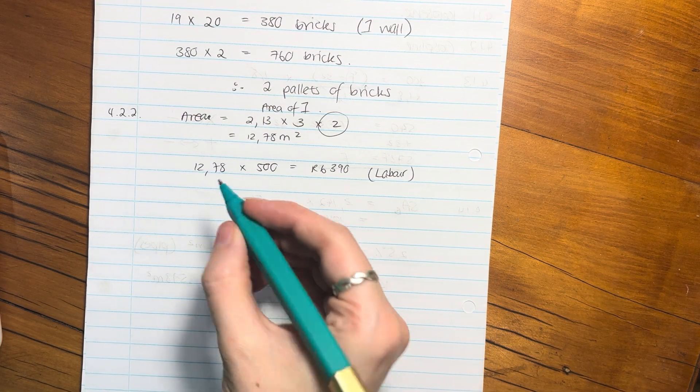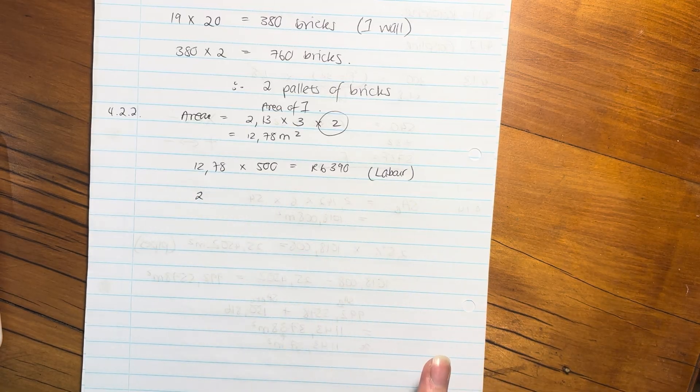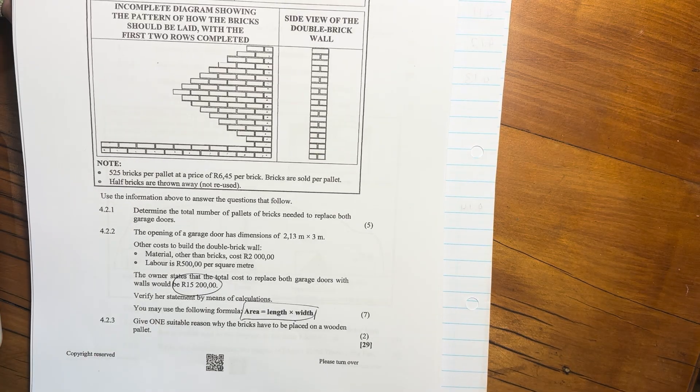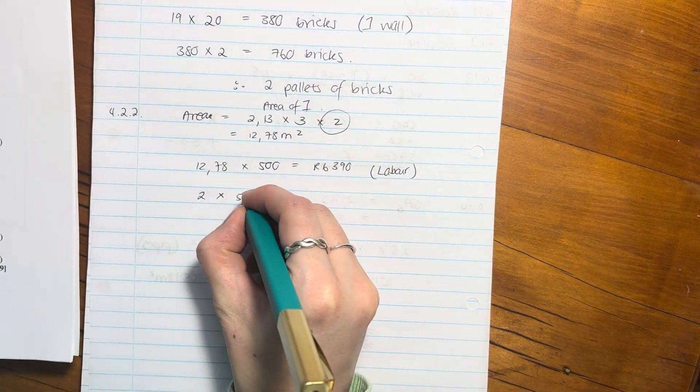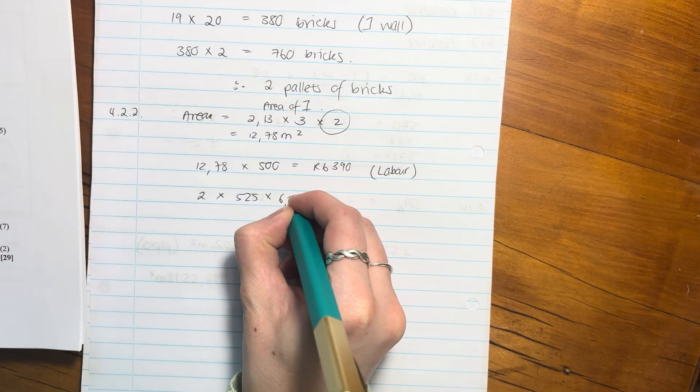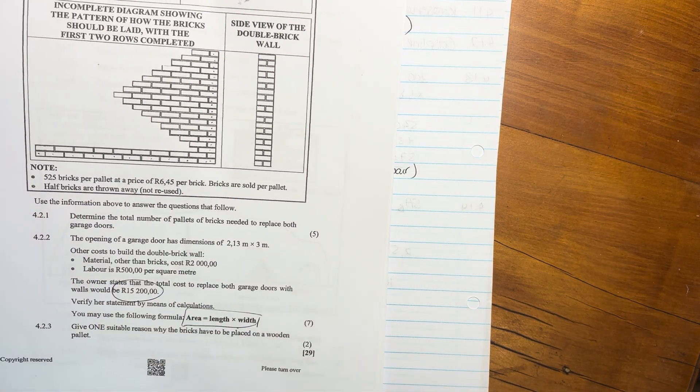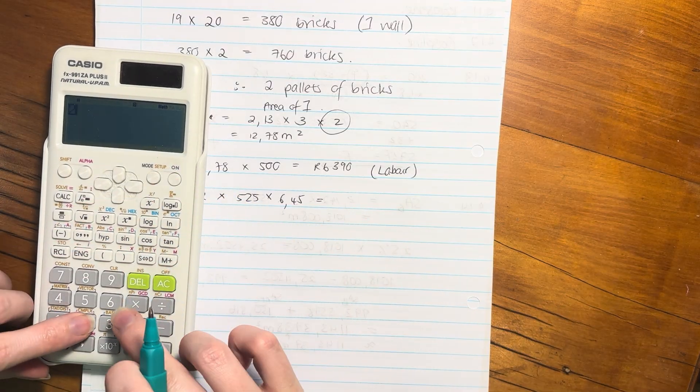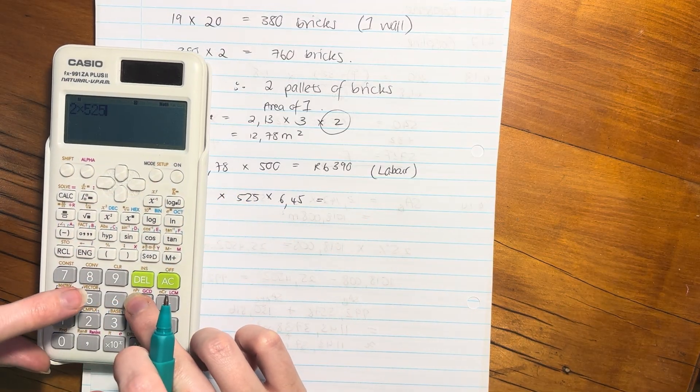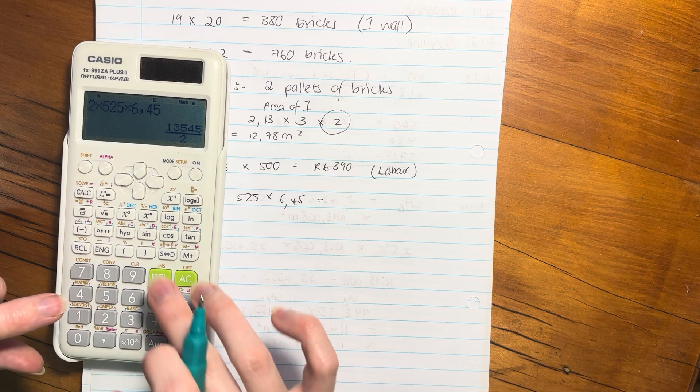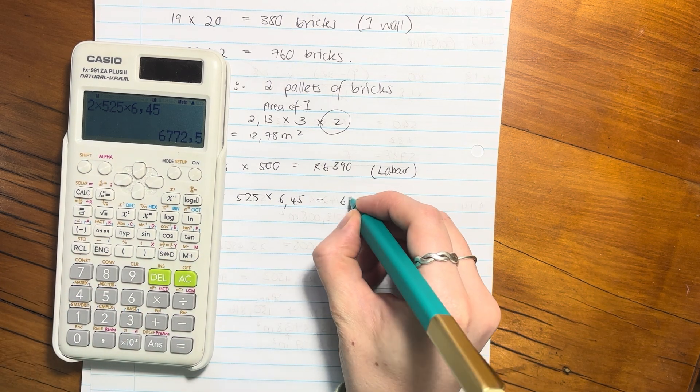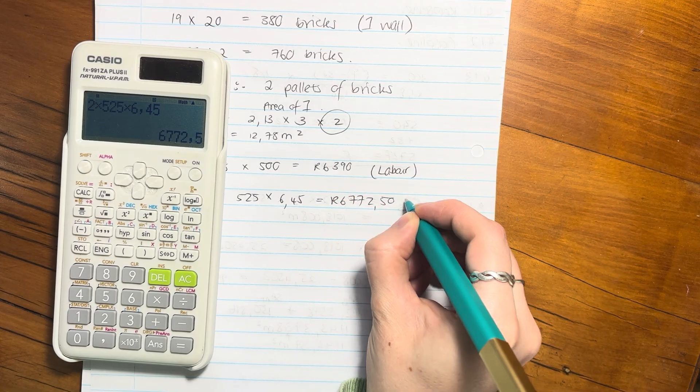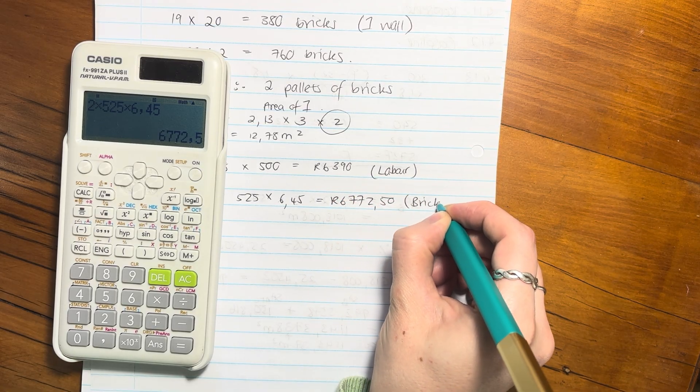Now we have to do the whole brick situation. How much are the bricks going to cost? We know we have to buy two pallets. Two pallets, and each has 525 bricks, and each brick costs 6.45. We have to times all of that, and that's going to be 6,772.50 for the bricks.